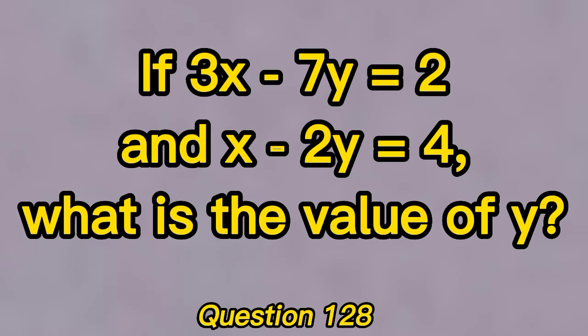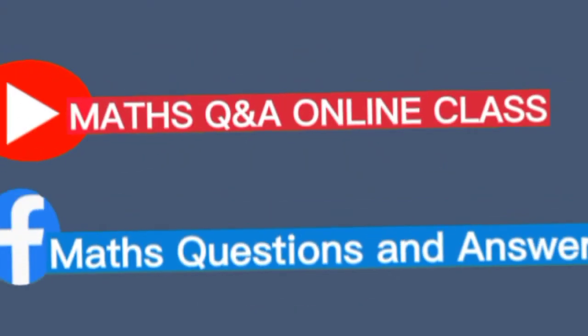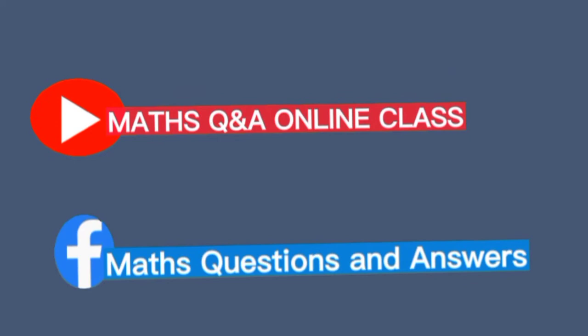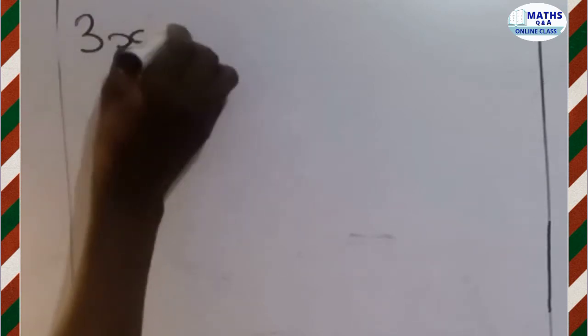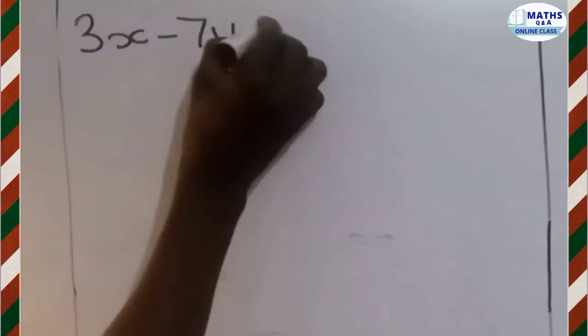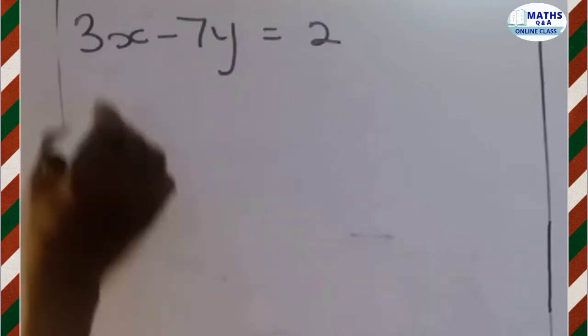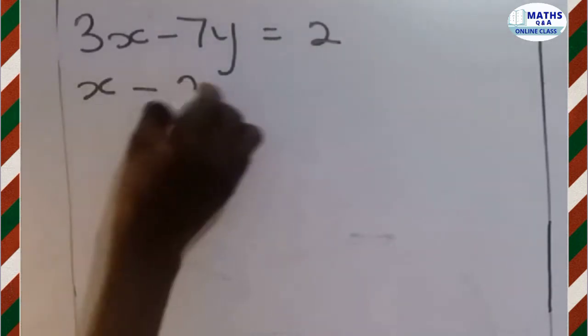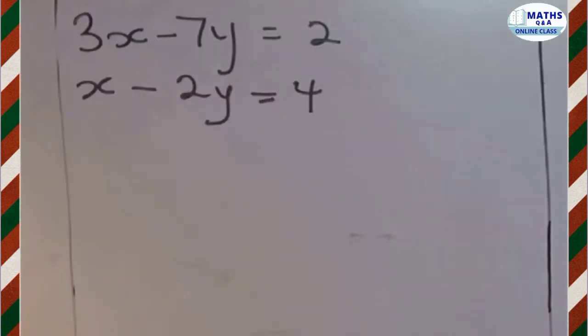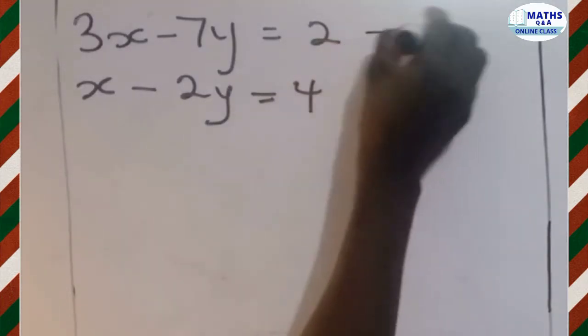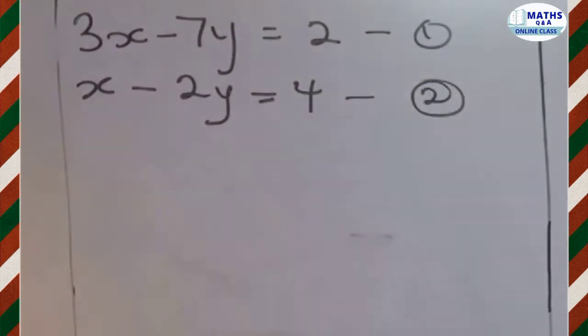If 3x minus 7y is equal to 2 and x minus 2y is equal to 4, what is the value of y? We are given these two equations: 3x minus 7y equals 2 as equation 1, and x minus 2y equals 4 as equation 2. We are asked to find the value of y.